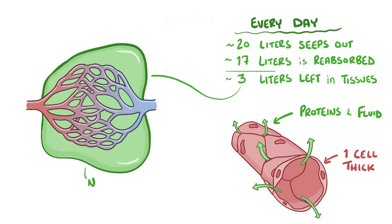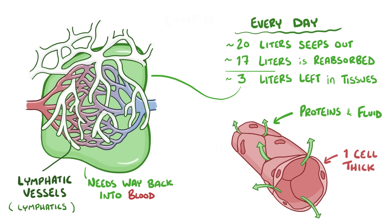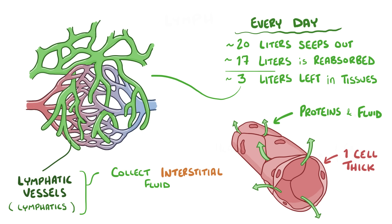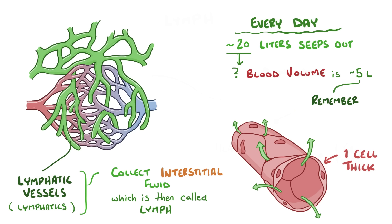That leaves around 3 liters of fluid behind in the tissues each day. This 3 liters needs to find a way back into the blood so that the body's interstitial fluid volume and blood volume both stay constant over time. You might be wondering how there can be 20 liters of fluid seeping out each day if the blood volume is only 5 liters — well, remember that the 5 liters is constantly in motion and gets recycled over and over every single day.